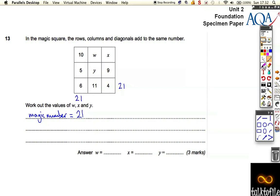So in every other direction, it should add up to 21. Well, if I do this one down here, I know that 9 plus 4 makes 13. So I know that x plus 9 plus 4 should equal 13.